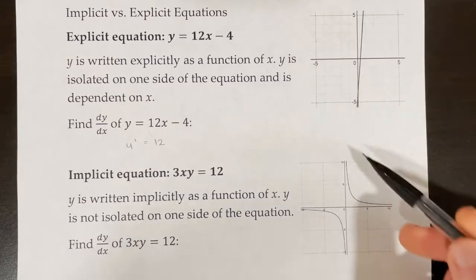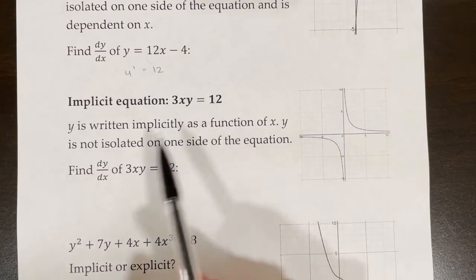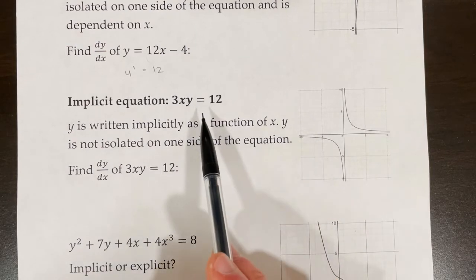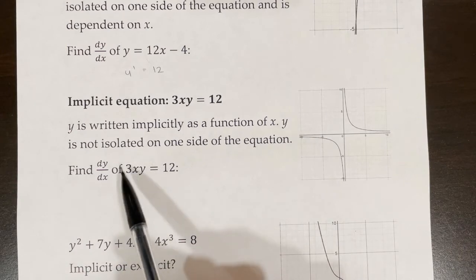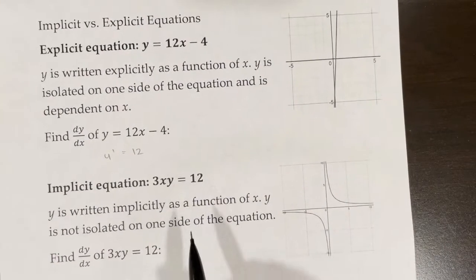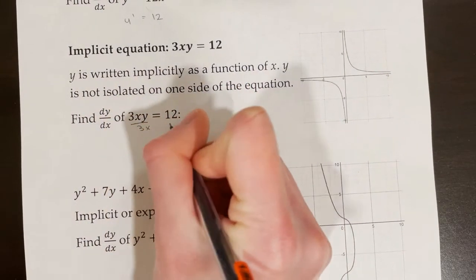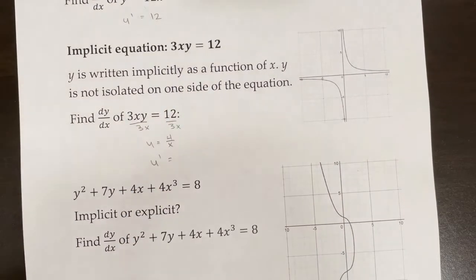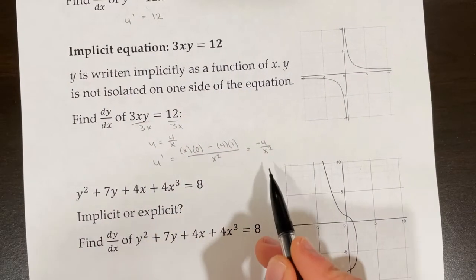This next equation is an implicit equation: 3xy is equal to 12. Y is written implicitly as a function of x — it is not isolated on one side of the equation. If we were asked to find the derivative of 3xy equals 12, what we would probably try to do is first isolate y to get it to look more like an explicit equation. So I would divide both sides by 3x and get y is equal to 4 over x. Then to find y prime, I would simply apply the quotient rule, and I get y prime is equal to negative 4 over x squared.